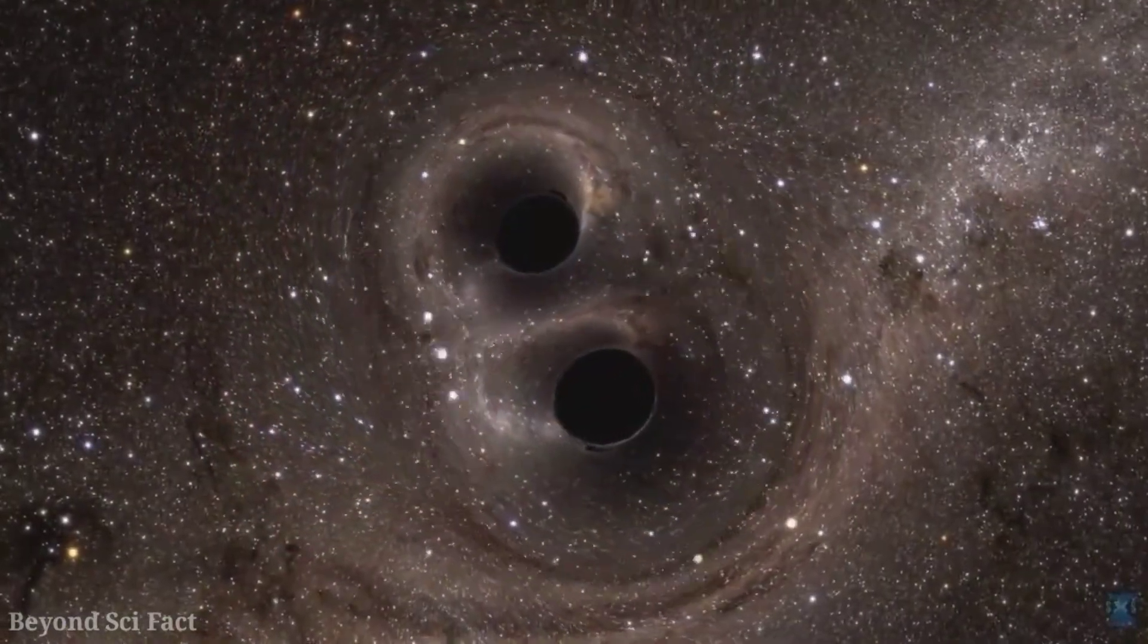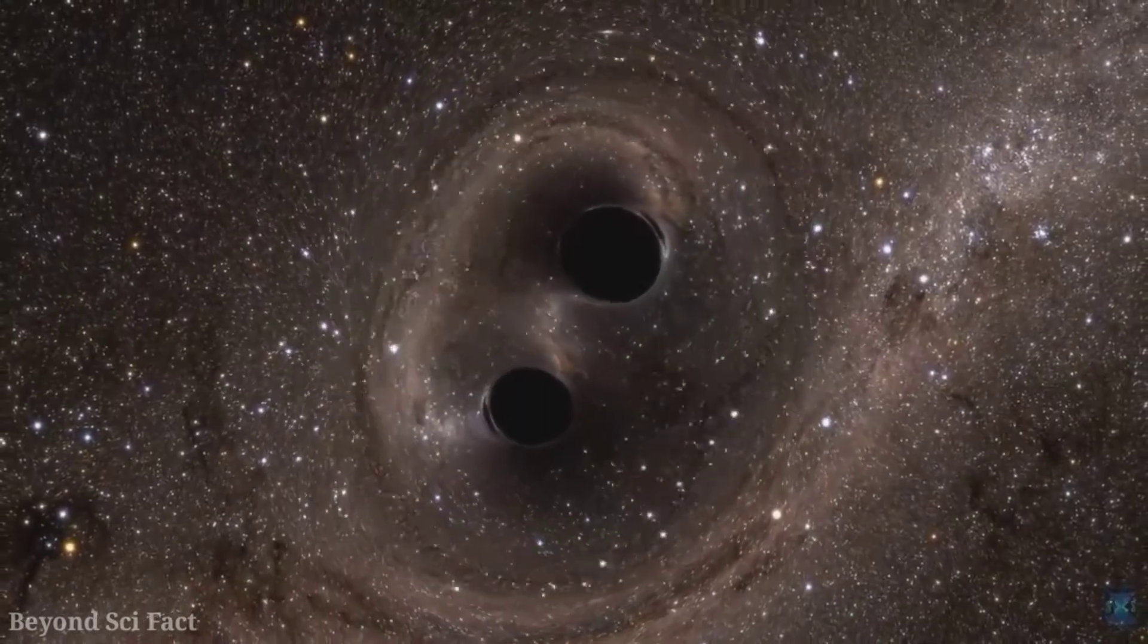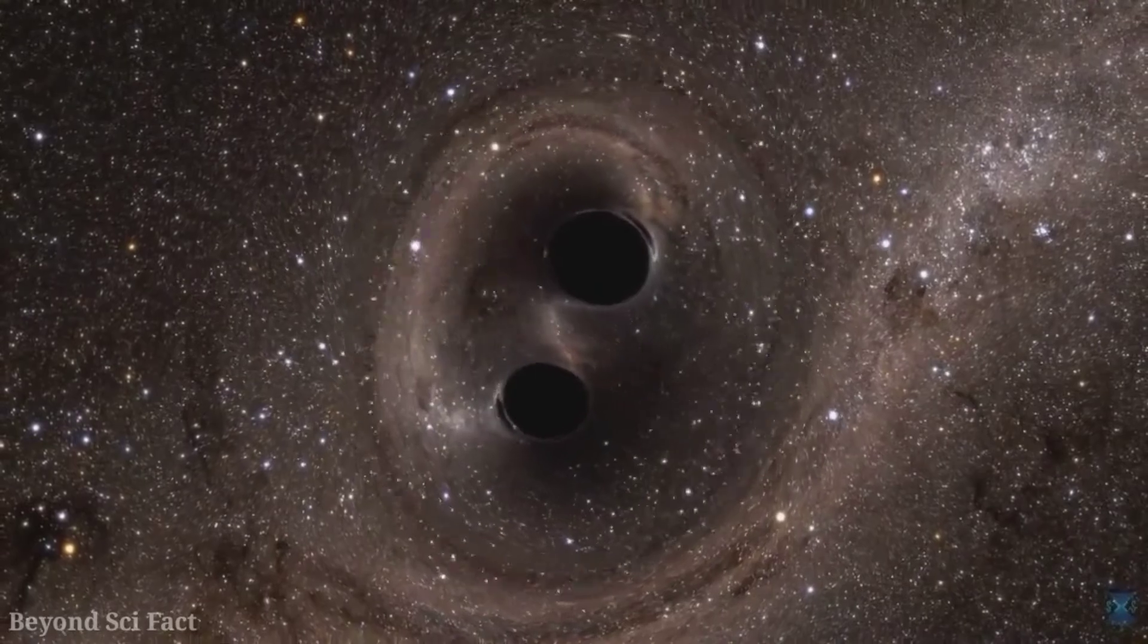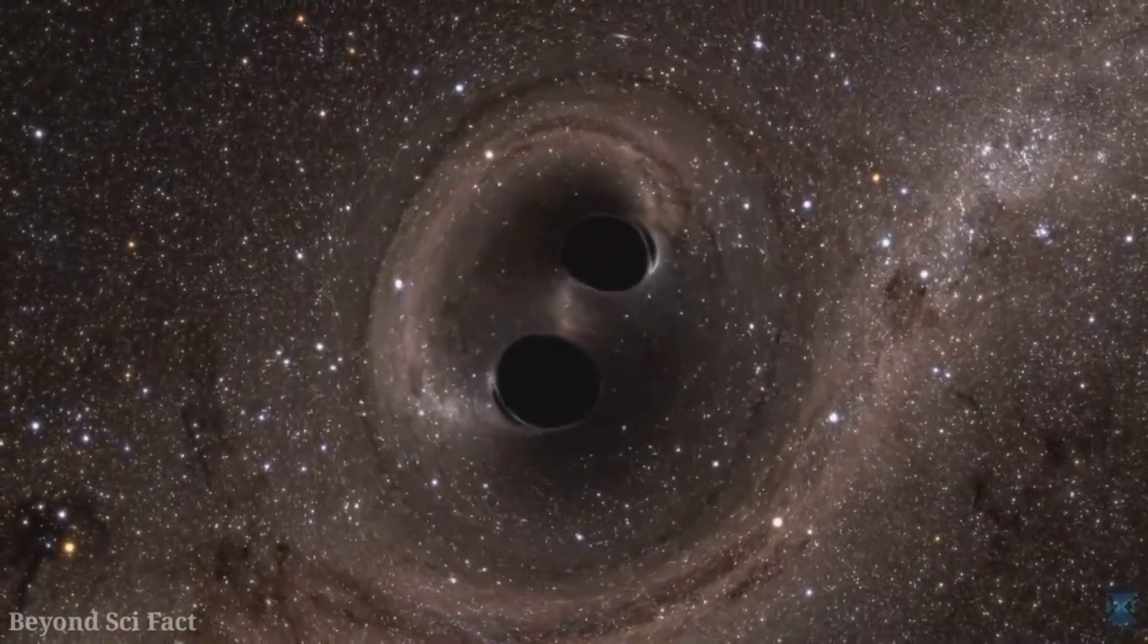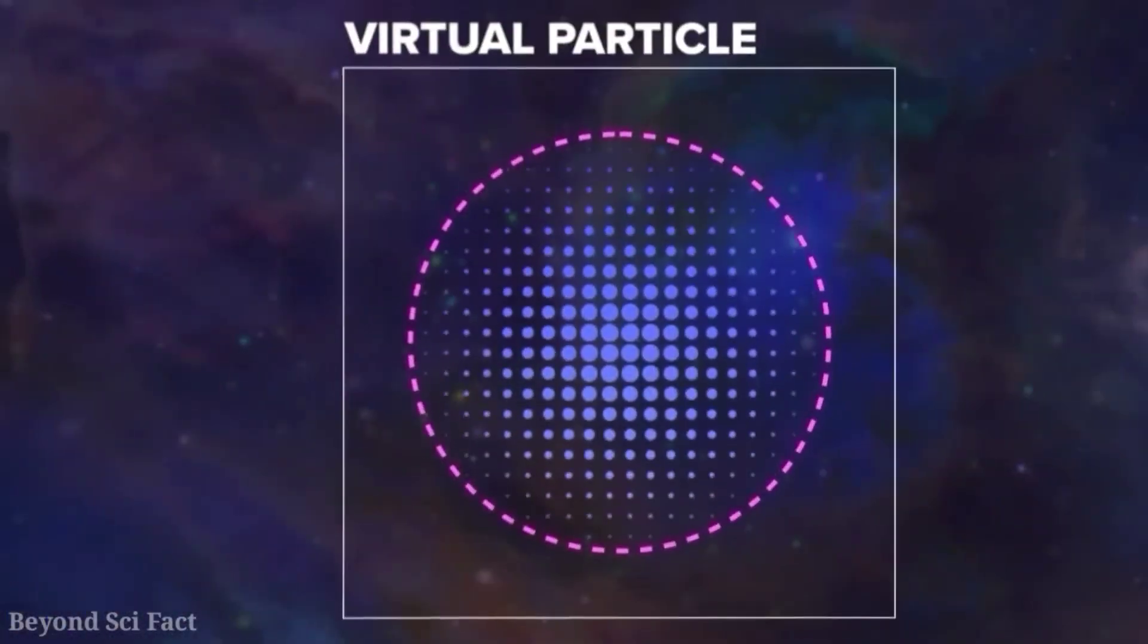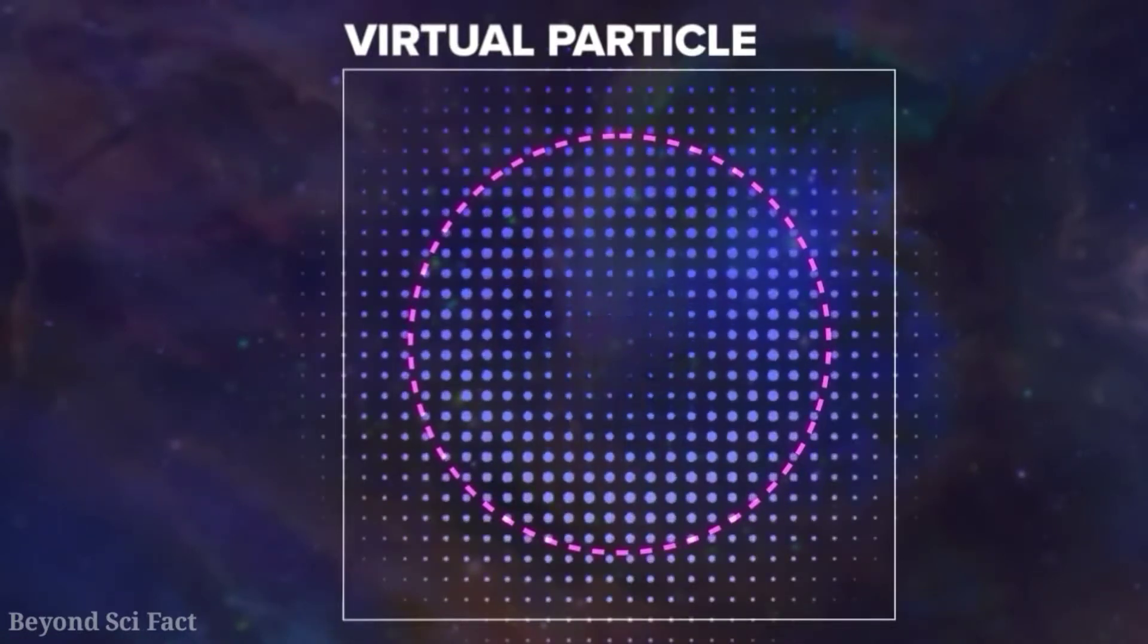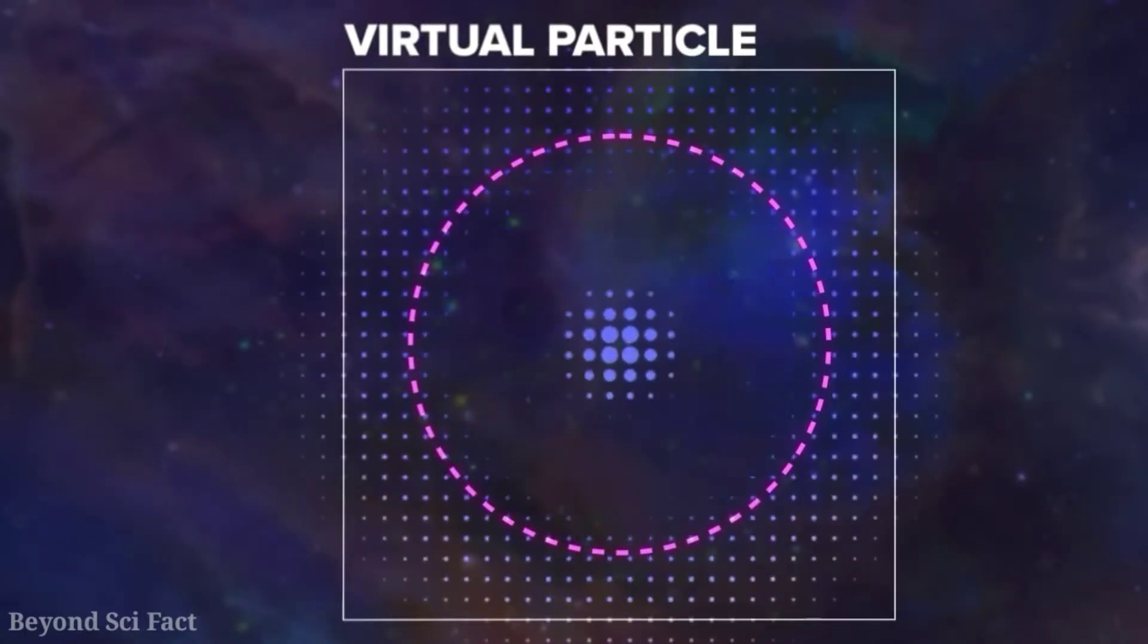This will give us Hawking radiation, in which Stephen Hawking first took the help of virtual particles to explain his theory, in which he had said that the event horizon of a black hole evaporates the antiparticle and the virtual particle, so that the particle moves in some different reality and which left behind the radiation. And afterward, it results in the shrinking of a black hole.